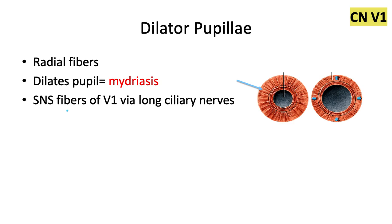The sympathetic nervous system fibers come from V1, the ophthalmic branch of the trigeminal nerve, cranial nerve 5. These feed into the nasociliary nerve, which branches off into the long ciliary nerves that supply this muscle.